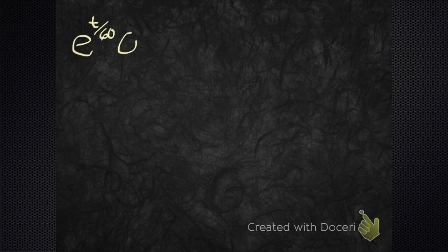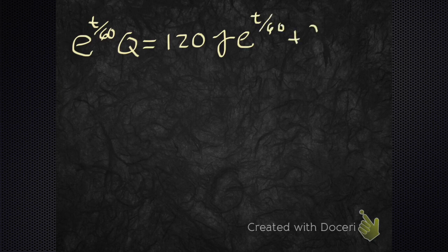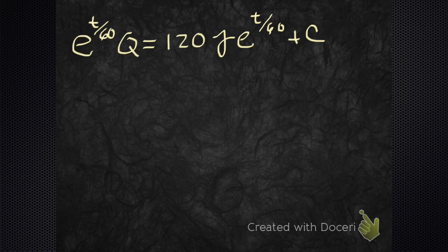Let me move this to another page so it looks cleaner. That's e to the t over 60, Q equals - I rewrote that other side with the 2 times the 60 being 120 gamma e to the t over 60 plus C.